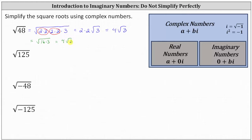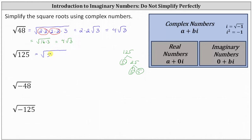Next, we have the square root of 125. 125 is not a perfect square, but it does contain the perfect square factor of 25. If we don't recognize this, we can look at the prime factorization of 125. 125 is equal to 5 times 25. 5 is prime, and 25 is equal to 5 times 5. The prime factorization consists of three factors of 5. Let's write the square root of 125 as the square root of 5 times 5 times 5. 5 times 5 is a perfect square. The square root of 5 times 5, or 5 squared, is equal to one factor of 5 outside the square root, giving us 5 square root 5.